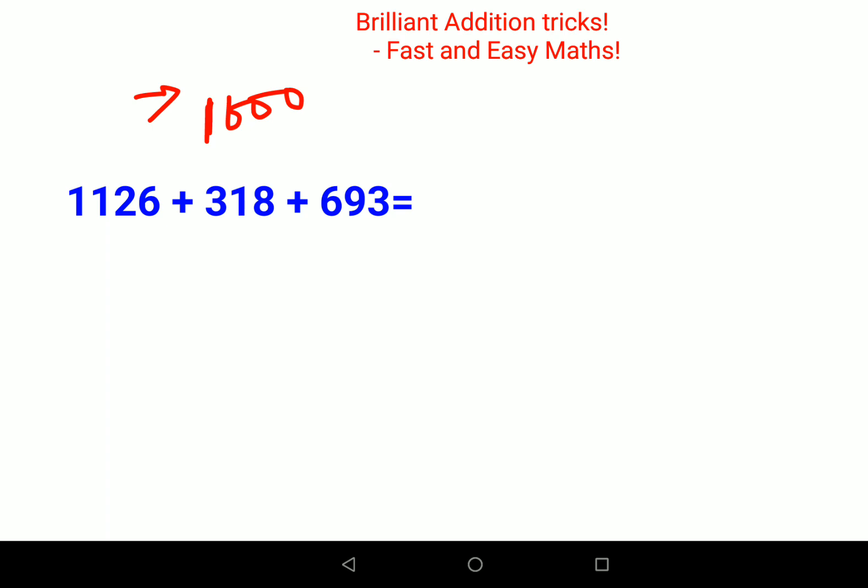Adding 20 plus 10 plus 90 gets you another 120, so that becomes 2120. Now you have 6 plus 8 which is 14, 14 plus 3 is 17. So that gets you two thousand one hundred and thirty seven. That's your answer for this particular addition.